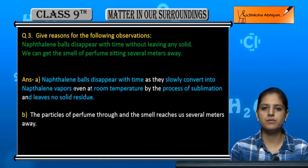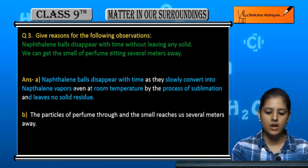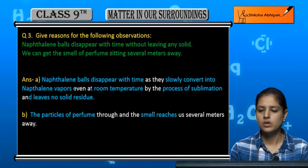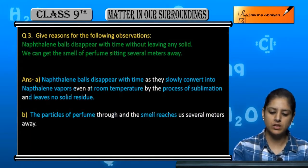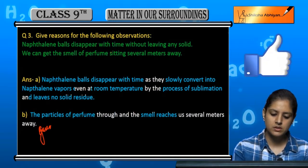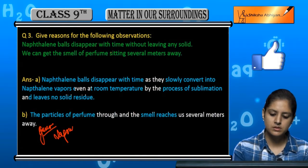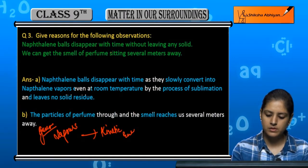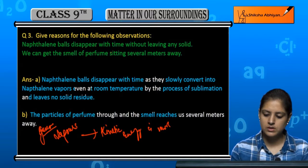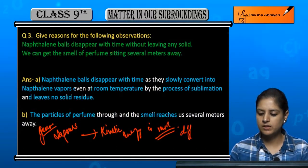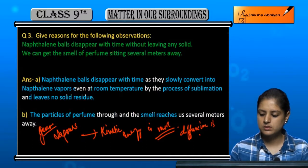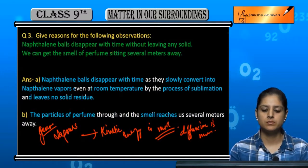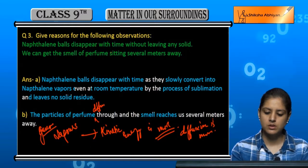For the second observation — we can get the smell of perfume sitting several meters away — if we are talking about the particles of perfume, they are gaseous, we can say vapors. The kinetic energy of these particles is high, so they diffuse through the atmosphere, which is why the smell of perfume reaches several meters away.